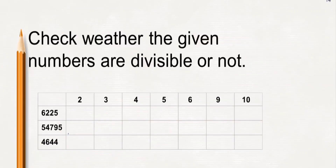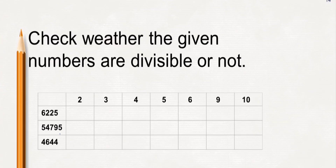So, dear students, it is simple and easy to check whether a given number is divisible by another number when you know the rules of divisibility. Hope you have understood the rules for checking divisibility by 2, 3, 4, 5, 6, 9, and 10. Check whether the given numbers are divisible by the given numbers or not. Thank you.